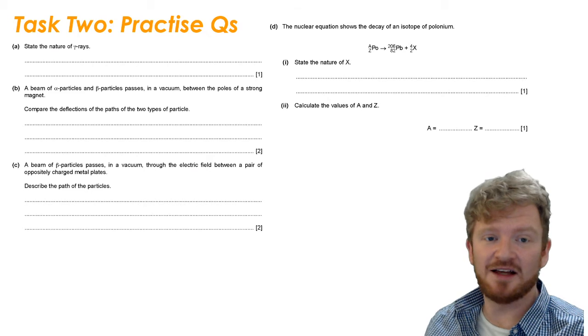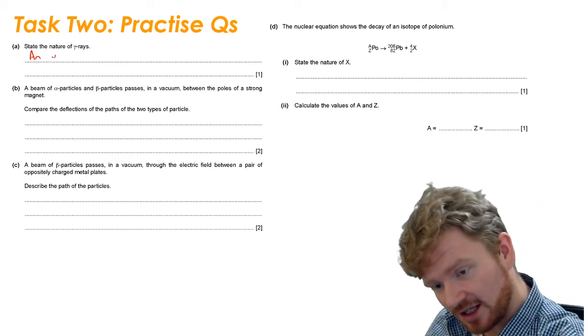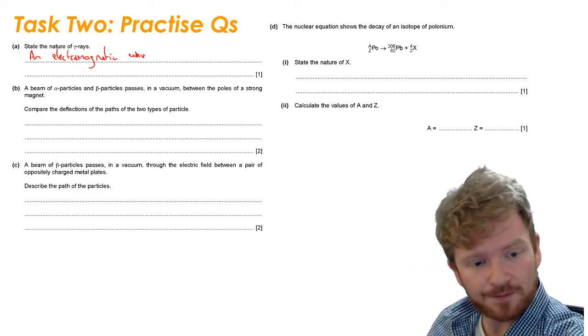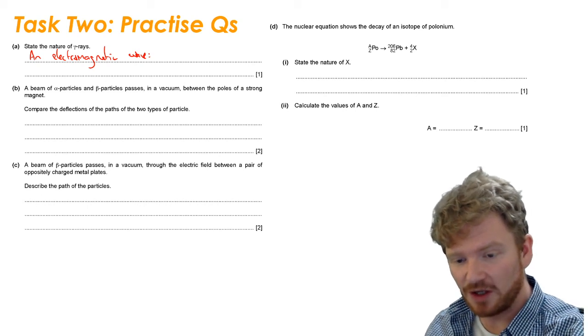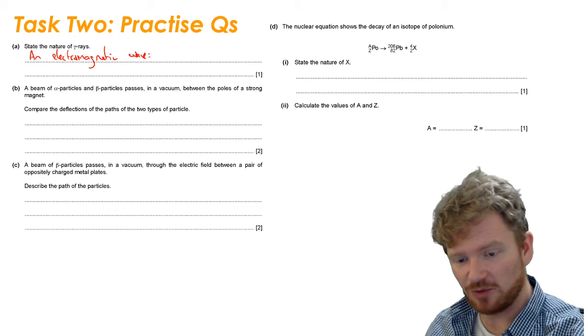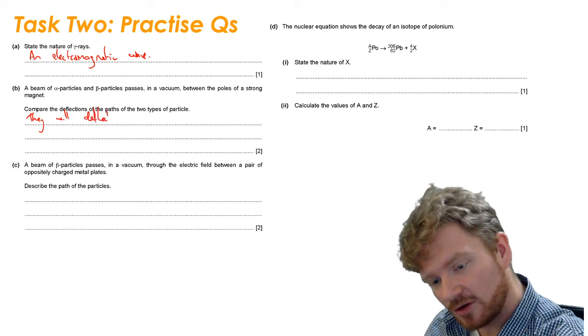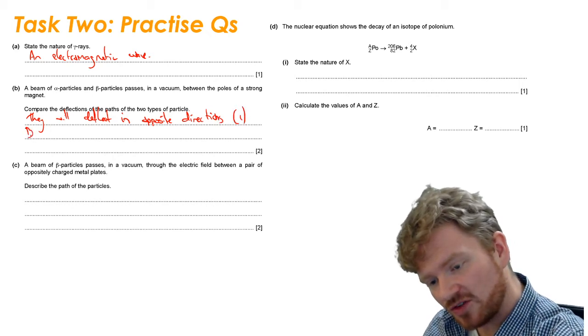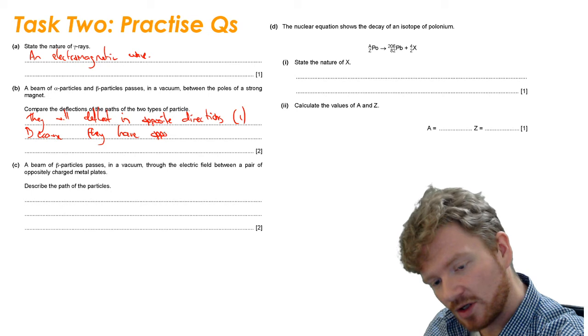Let's have a go at these questions. Question one, state the nature of gamma rays. That is an electromagnetic wave. Question two, a beam of alpha particles and beta particle passes in a vacuum between the poles of a strong magnet. Compare the deflections of the path of the two types of particle. They will deflect in opposite directions. That's worth one mark. And then you're going to say why: because they have opposite charges. That will be worth the second mark.